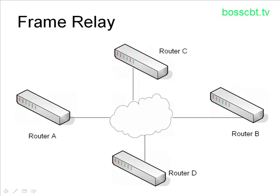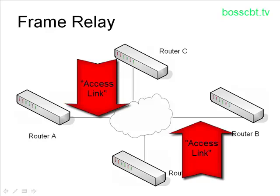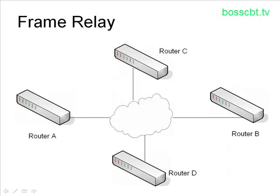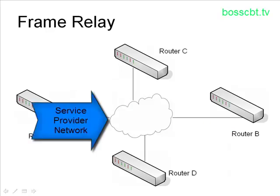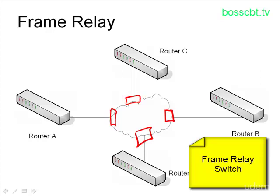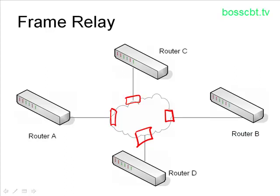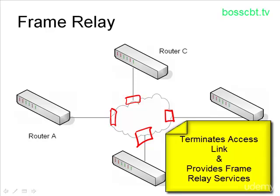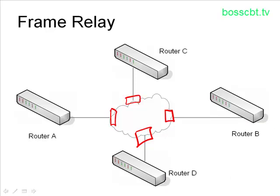Our components here are pretty straightforward. We have routers and the circuits — the circuits are often referred to as access links. In the Frame Relay cloud, which is owned by the service provider, each circuit is going to be terminated by a Frame Relay switch. That switch is responsible for terminating the circuit and for providing the Frame Relay services. Frame Relay itself has its own data link header and data link trailer.